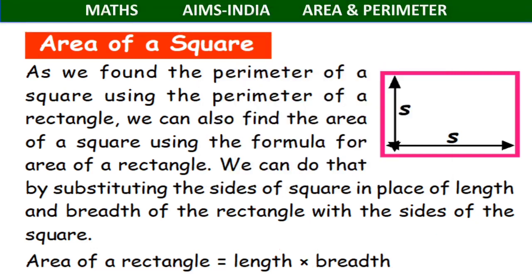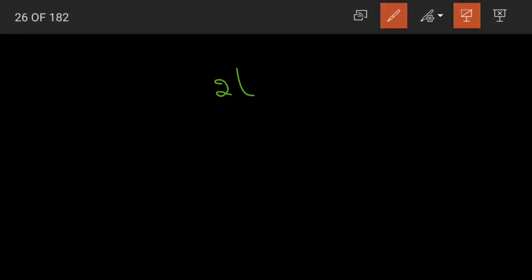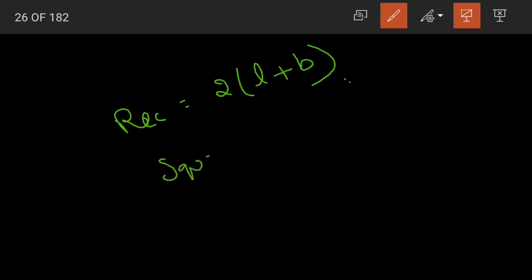Now coming to the area of a square. Just as we found the perimeter of a square using the perimeter of a rectangle, we can also find the area of a square using the formula for area of a rectangle. We do that by substituting the sides of the square in place of length and breadth.